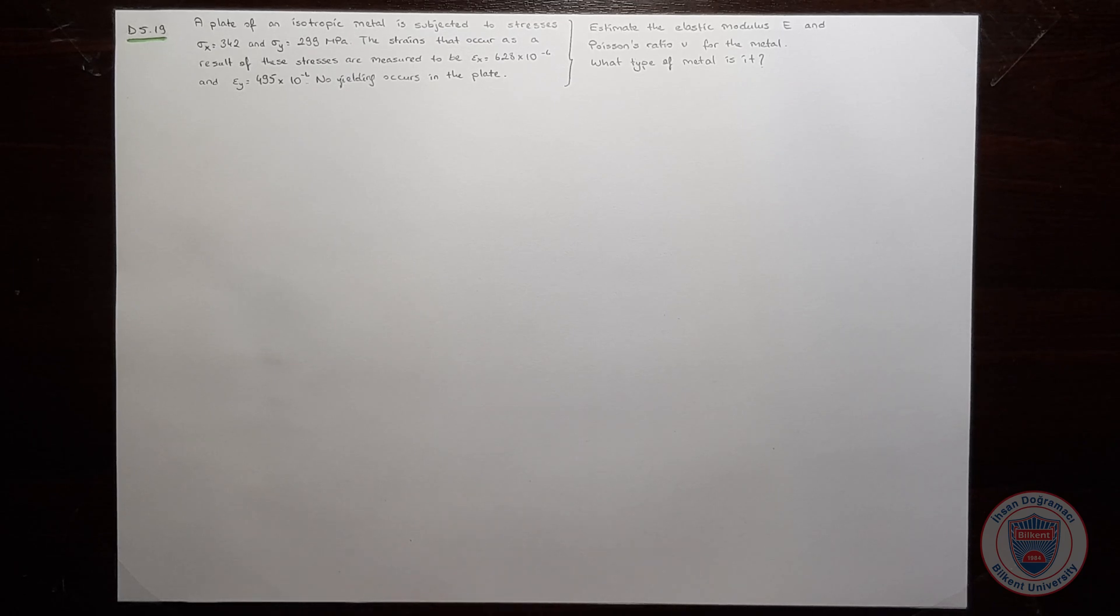We would like to estimate Young's modulus and Poisson's ratio for the metal, and finally we will comment on what type of metal it is. To solve the question, we will use generalized Hooke's law.